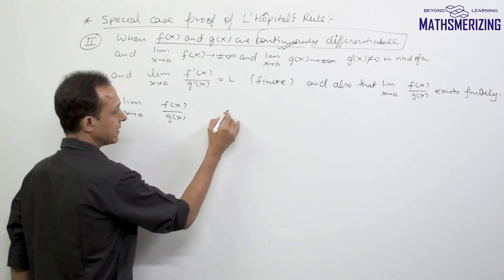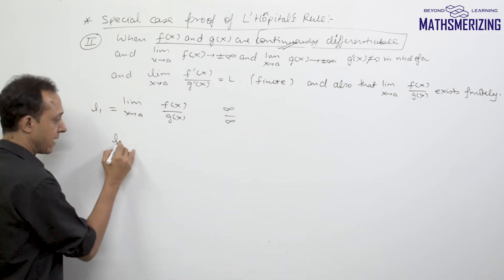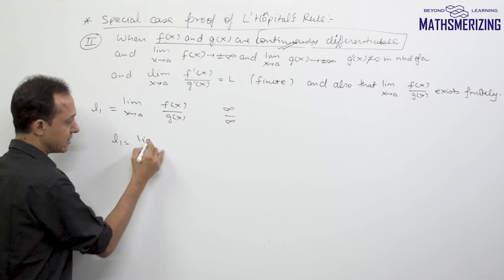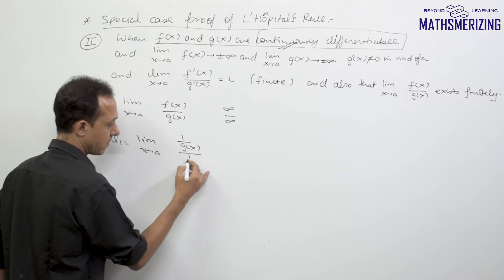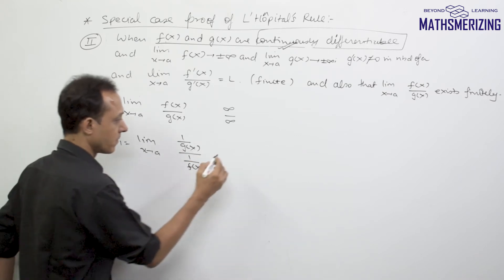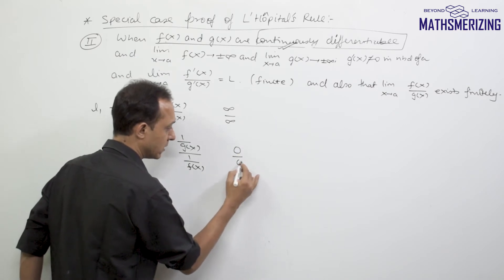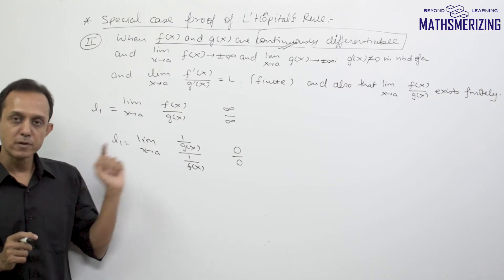Now we know that it is infinity upon infinity form. So I can write L1 as limit x tends to a of 1 upon g(x) divided by 1 upon f(x). So 1 upon g(x) will be 0 and 1 upon f(x) will be 0. So I've expressed it as 0 upon 0 form.